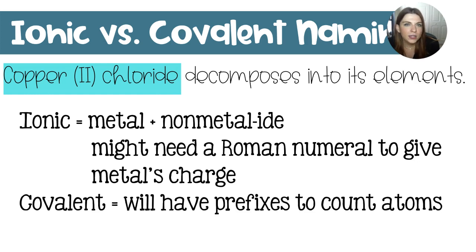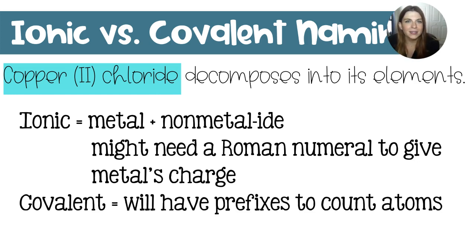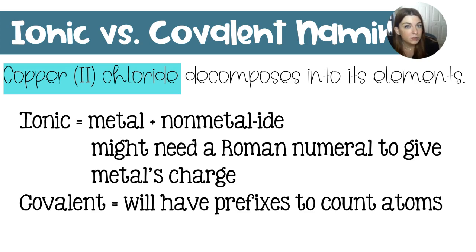If this were a covalent compound, then I would have prefixes to indicate the number of atoms. This is why understanding naming is so important, because from a name you can figure out what type of bonds you have. So if you have ionic bonds, you are allowed to crisscross. But if you have covalent bonds, you are not allowed to crisscross.